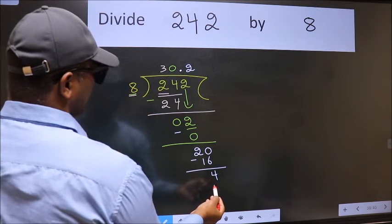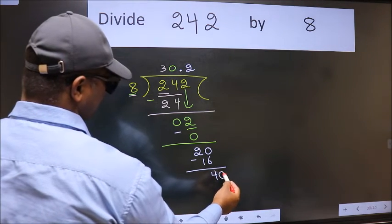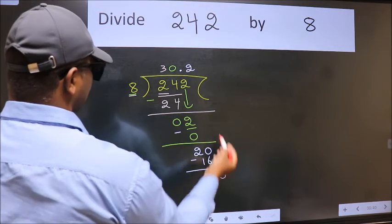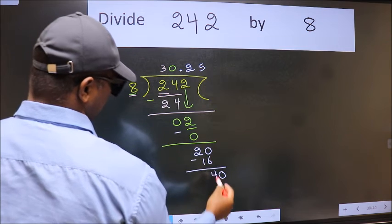4 is smaller than 8, and we already have the decimal, so directly take 0, so 40. When do we get 40 in the 8 table? 8 fives 40.